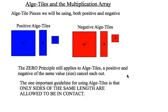So, the zero principle still applies that if we pair up an x squared and a negative x squared, they zero each other out and cancel themselves off.